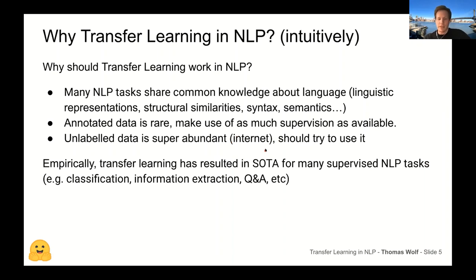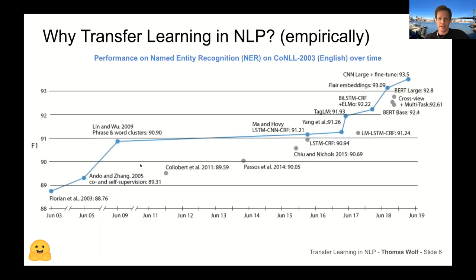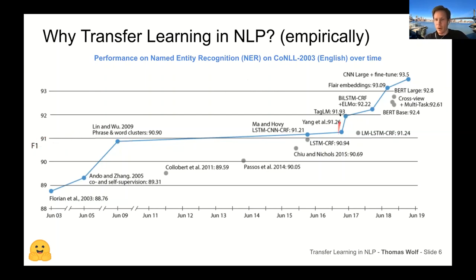Empirically, transfer learning has resulted in the state of the art for many NLP tasks. As a cherry-picked example: named entity recognition is a fairly old task — this dataset is now more than 15 years old. You can see there have been a series of jumps in F1 score, and basically all these jumps came from some form of transfer learning.